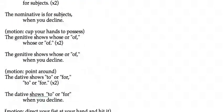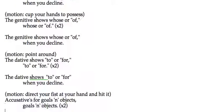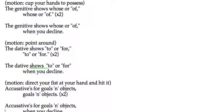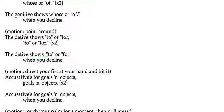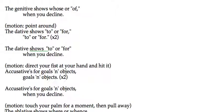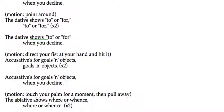The dative shows two or four, two or four, two or four. The dative shows two or four when you decline.